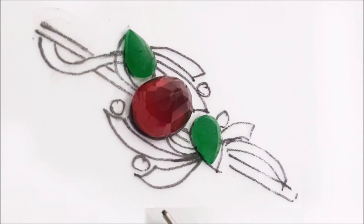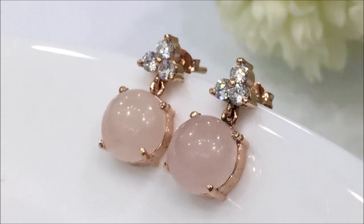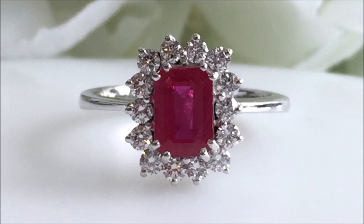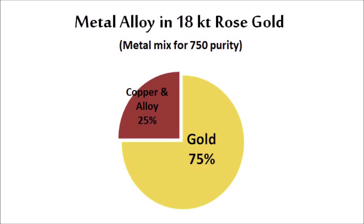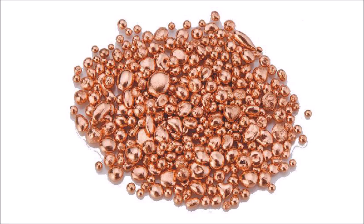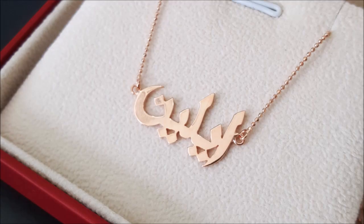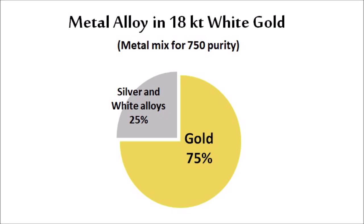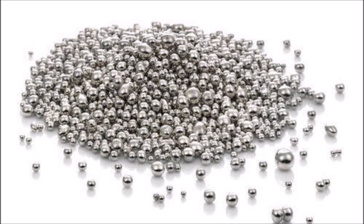This video would be incomplete without mentioning rose gold and white gold. Rose gold is also 18 carat gold — it has 75% gold and 25% alloy. The rich pink color in rose gold comes from more copper in its alloy; copper has a nice pink color which transforms the overall jewelry to a soft rose-pinkish hue. Similarly, white gold is also 18 carat gold with 25% white metal alloys and 75% gold. It has a rich white color due to the use of white metals in its alloy.